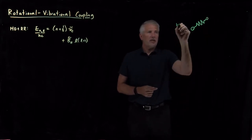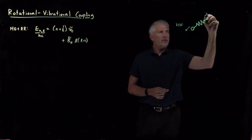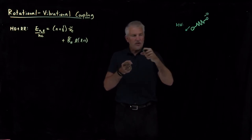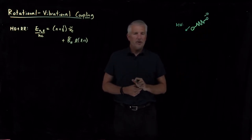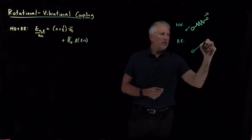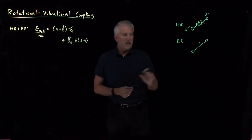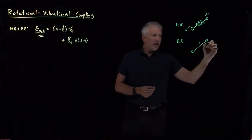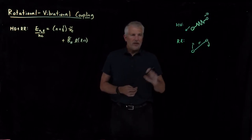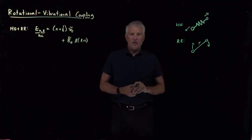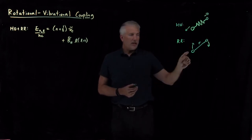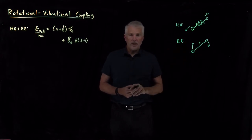The harmonic oscillator says the molecule behaves as if attached by a harmonic spring — the bond length can be long or short, oscillating around some equilibrium position. The rigid rotor says the molecule is connected by a bond of a particular length and it rotates. There is an inherent contradiction: the harmonic oscillator requires that the bond change length, while the rigid rotor requires that the bond remain constant.